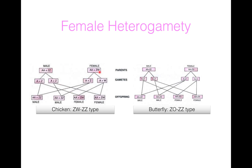In chicken, the female has ZW with autosomes and the male has ZZ with autosomes. The male produces a single type of sperm, that is A plus Z. But the female produces two types of gametes: A plus Z and A plus W. When A plus Z of female fuses with A plus Z of male, a male is produced because ZZ. When A plus W fuses with A plus Z, autosomes plus ZW is produced, that is a female. So it is a ZW/ZZ type of female heterogamety.